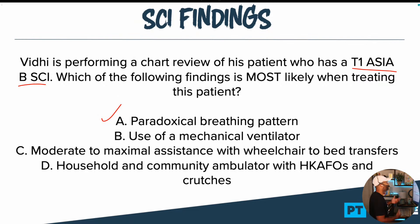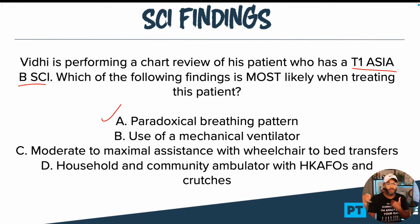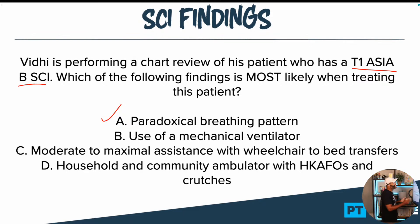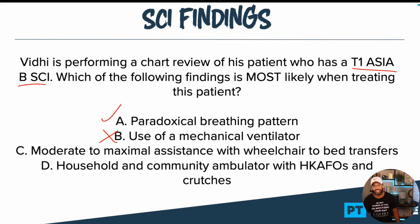B says the use of a mechanical ventilator. I don't like this answer because if we think about the diaphragm, it's innervated by C3, C4, C5 — the diaphragm's alive. This patient has an upper thoracic problem. Do we expect them to have difficulty with inspiration? No, because they have the diaphragm. So it's not likely I'll see the use of a mechanical ventilator. If it's at C4, then I can see it. C3, I can see it. But at T1, not likely.